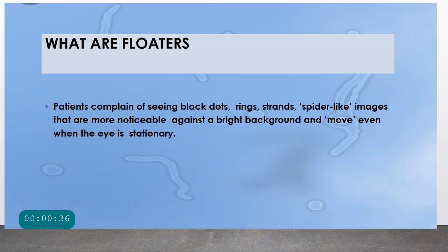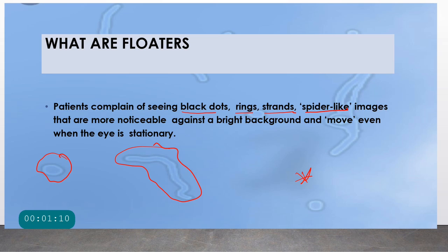So what are floaters? Patients will often complain of seeing black dots, rings, or strands, and sometimes spider-like images that are more noticeable against a bright background and even move when the eye is stationary. As you can see in this picture, such worm-like structures, ring-like structures, dot-like structures, and web-like or spider web-like structures can be seen floating in the patient's field of vision. They are often very visible when the patient is looking towards a bright object like a tube light. Such objects, which move with the movement of the eye and sometimes even when the eye is stationary, are called floaters.